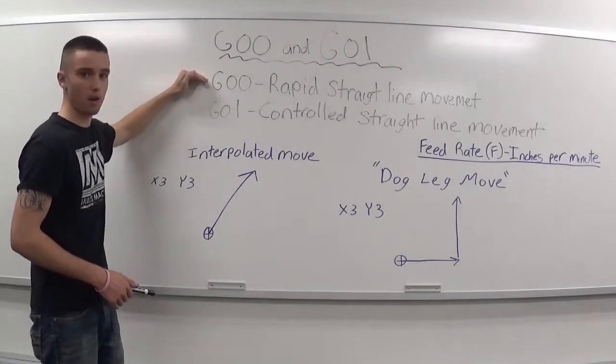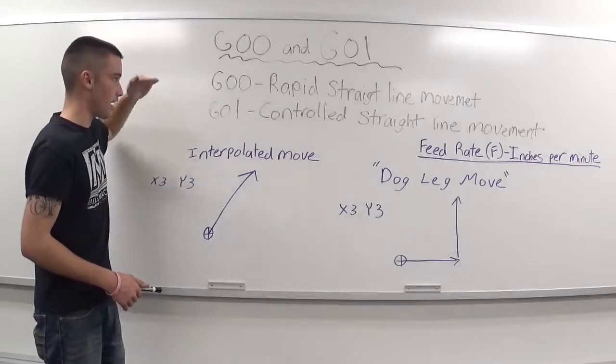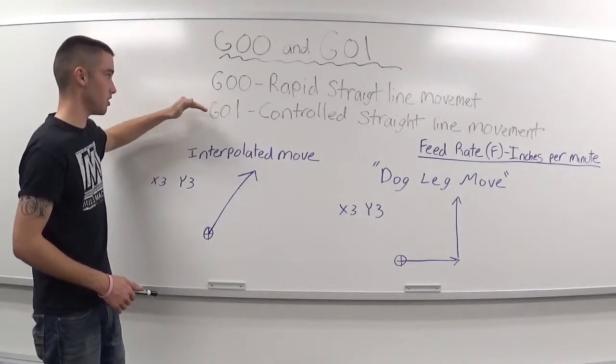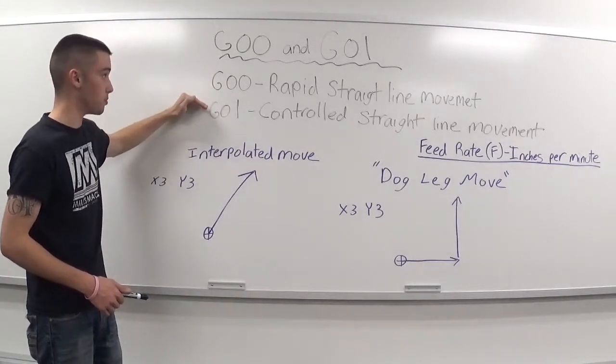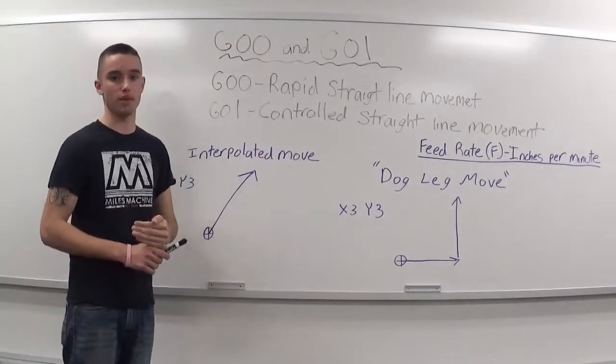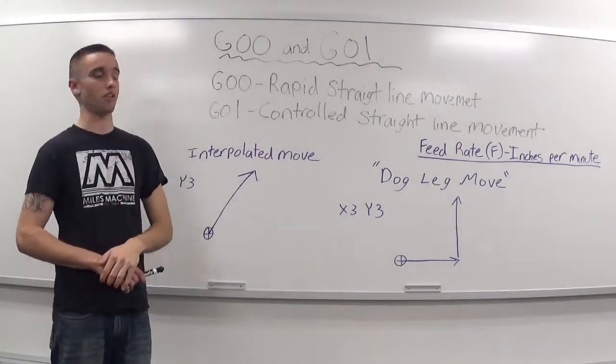So if I go from G00 and I don't want it anymore, I can call up a G01 and the machine will start now reading the controlled straight line movements. You also have G02 and G03 within the same group. We'll learn about those at a later time.